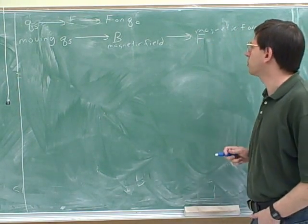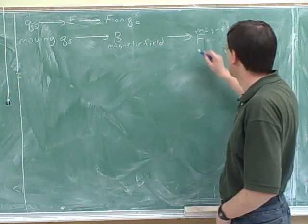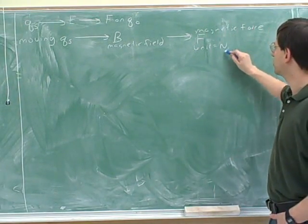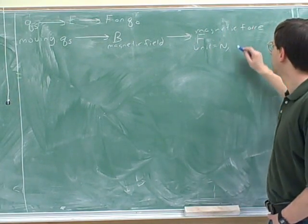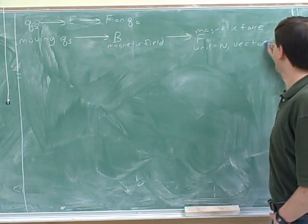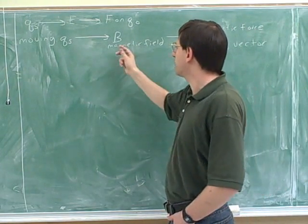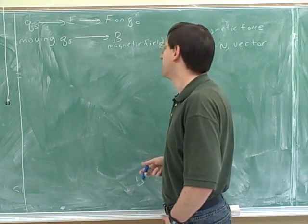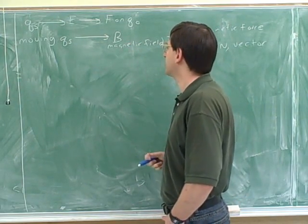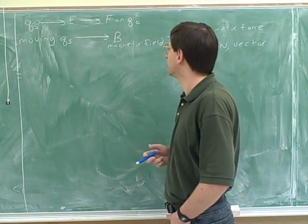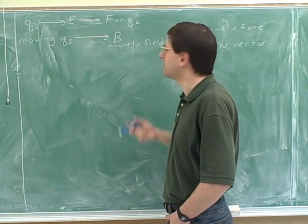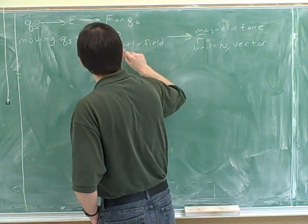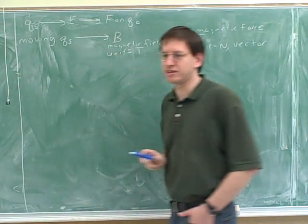What would be a good unit for magnetic force? Because it's a force, it would be Newtons. And would the magnetic force be a vector or a scalar? A vector, because it's a force. Now we have to learn what the units are for magnetic field. If you happen to remember a unit for magnetic field, this would be the Tesla.